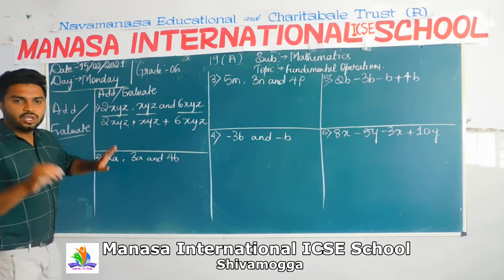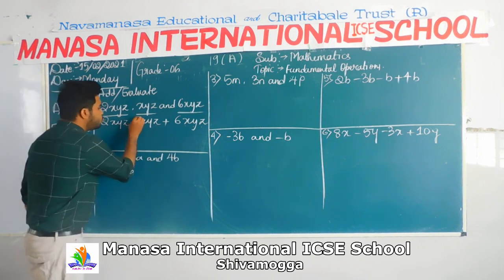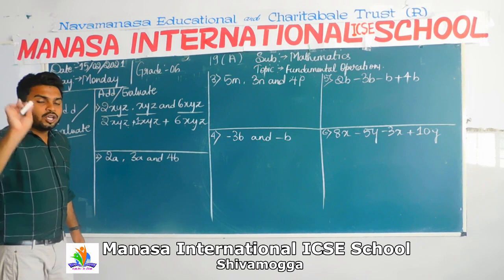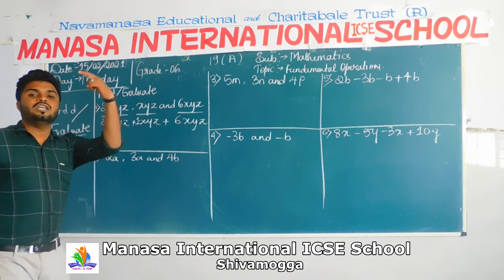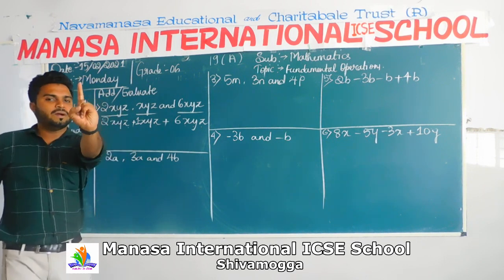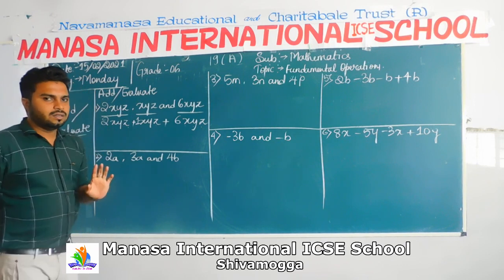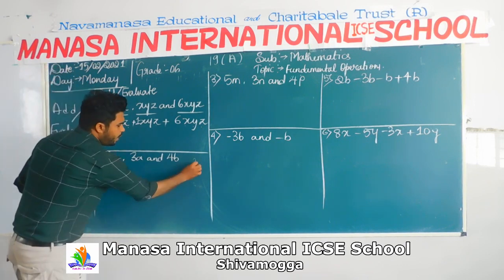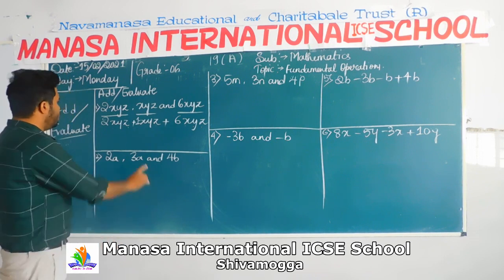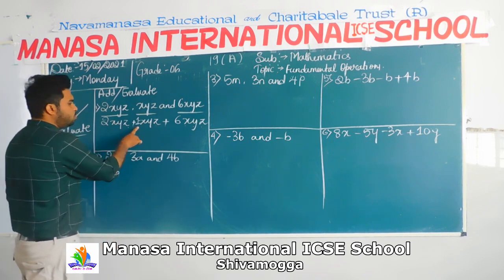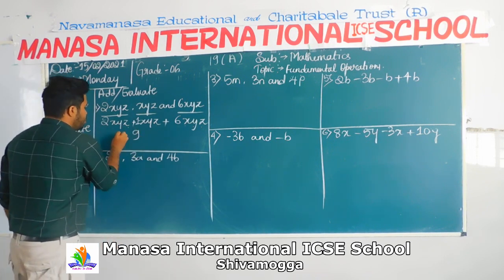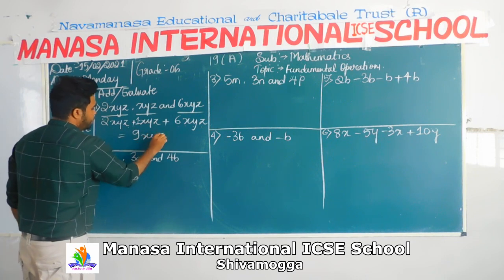So, 2 — if you don't have any coefficient, it is to be considered as 1. Please understand: if you don't have any number, the sign is plus and the number is nothing but 1. For example, if you have X, it is nothing but 1X. So 2 plus 1 is 3, and 3 plus 6 is 9. So the answer is 9XYZ.